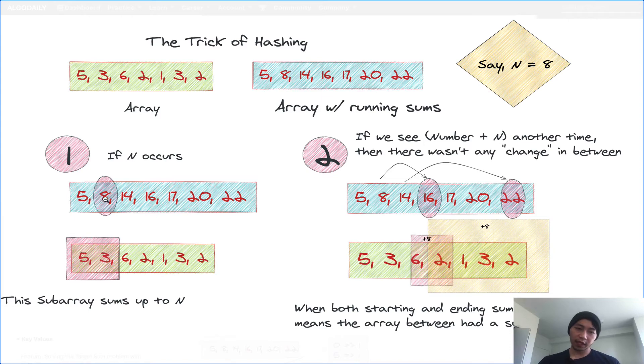If we look at the running sum, and the running sum at the first index is 8, 5 plus 3 equals 8, that means that this subarray sums up to n. So that makes sense. So here we have one subarray that sums up to 8.